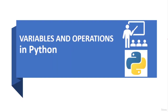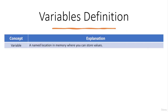Now you will cover variables and their operations. Variables in Python are like boxes — you can put stuff in them and take stuff out, but just like boxes you have to label them properly and remember what's inside or else you will end up with a mess. In Python, a variable is a named location in memory where you can store values. You can assign values to variables and then use them in your program to store and manipulate data.